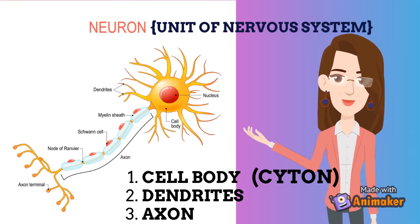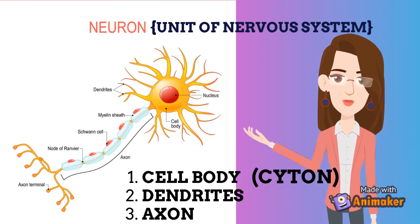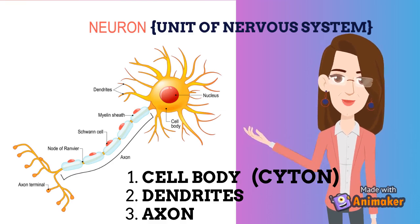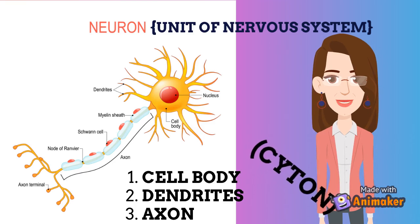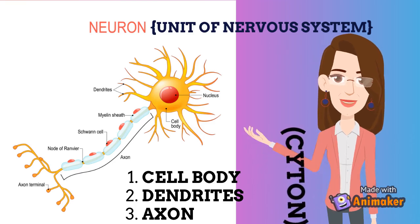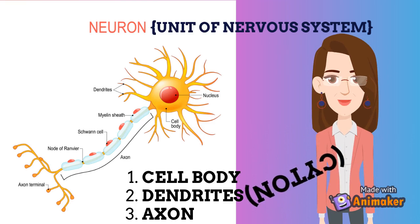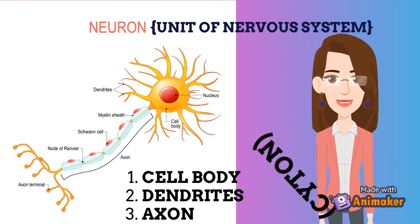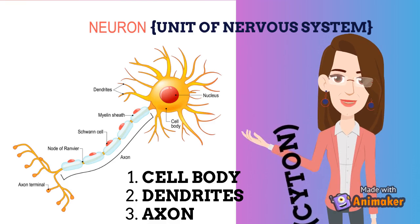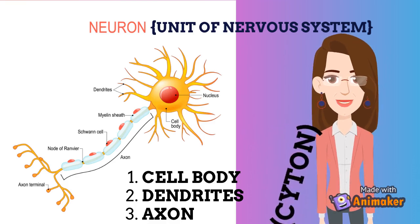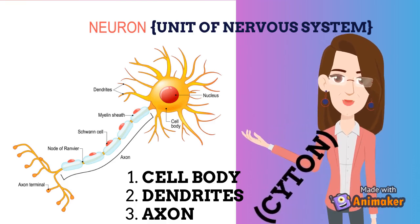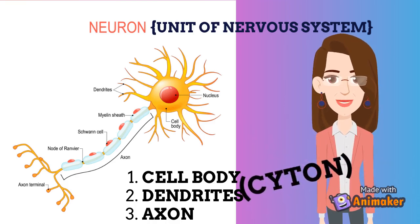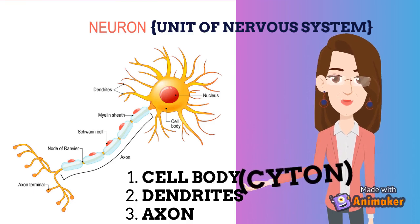The third part is the axon. It is a long process from the cell body and varies in size from a few millimeters to even more than one meter in length. In most neurons, the axon is surrounded by a wide insulating sheet called the myelin sheath, which is covered by an outermost thin layer called the neurolemma.